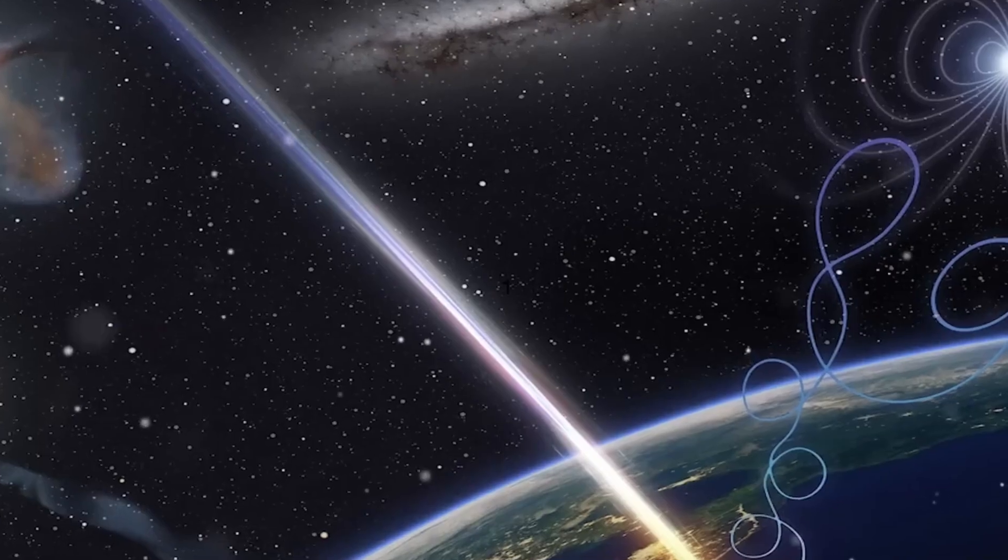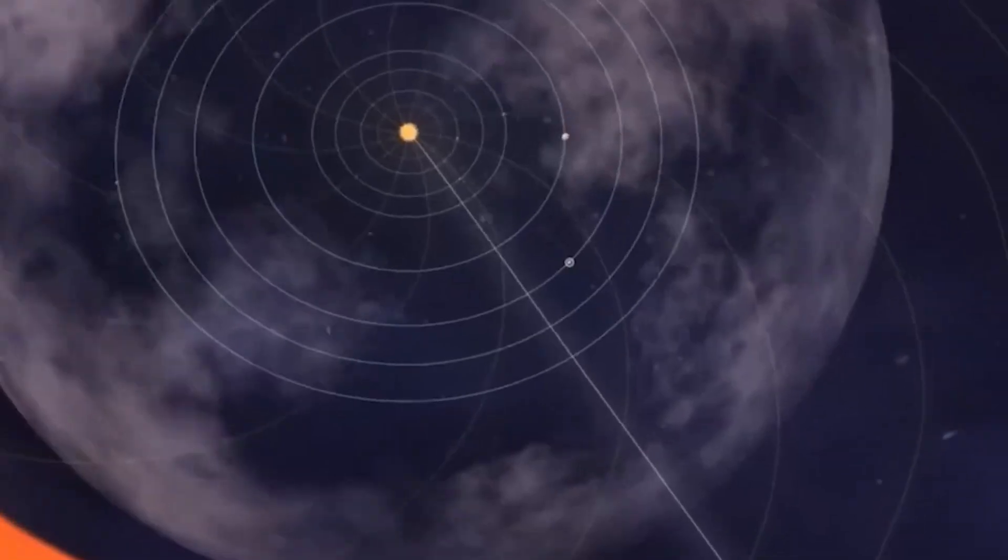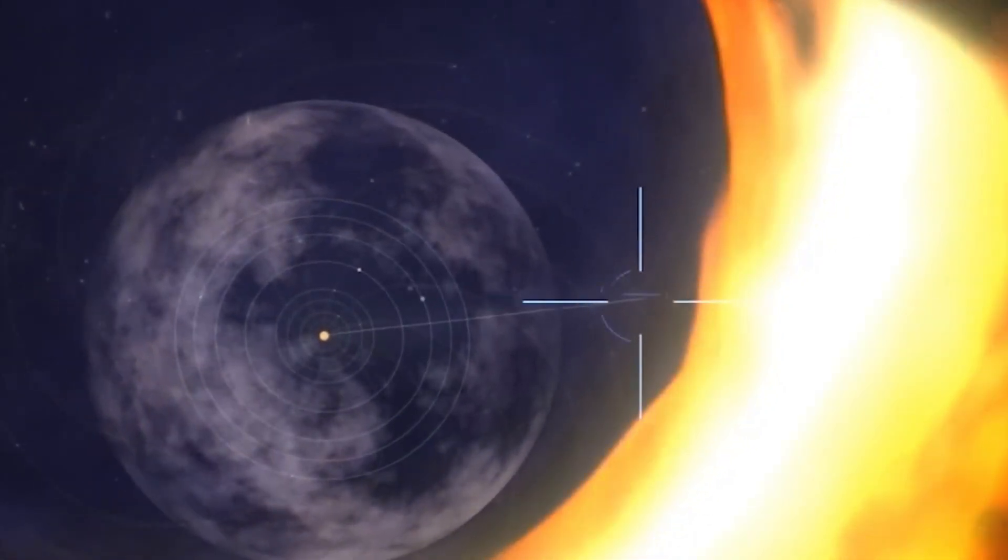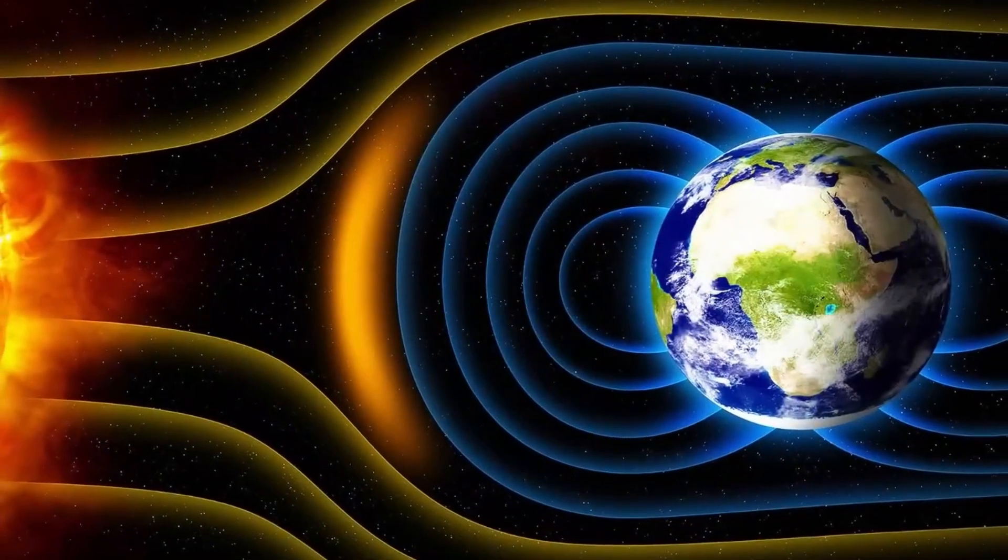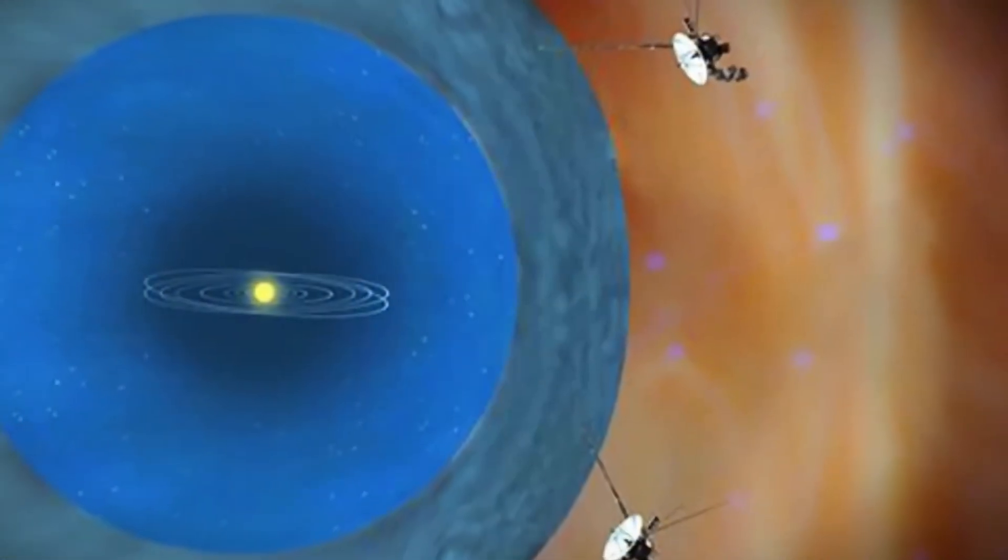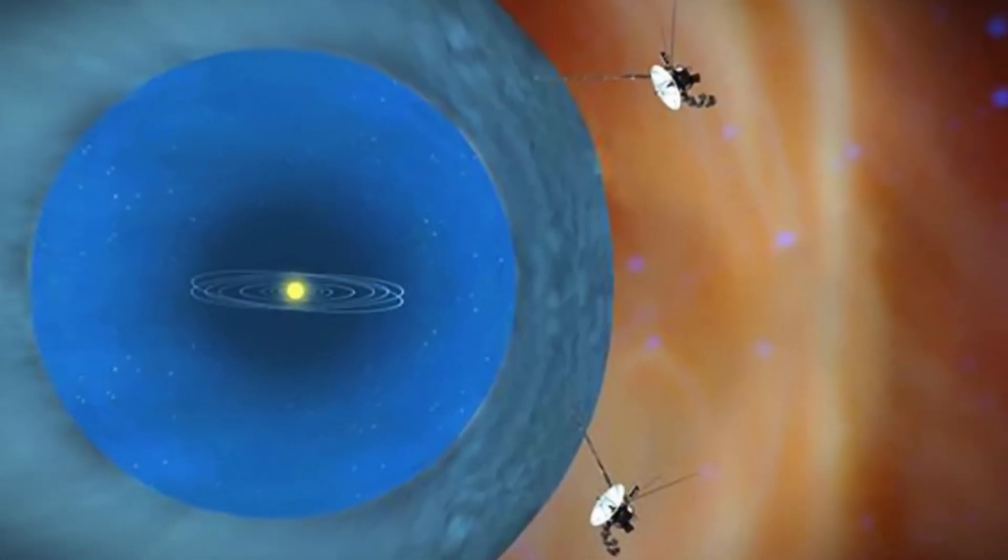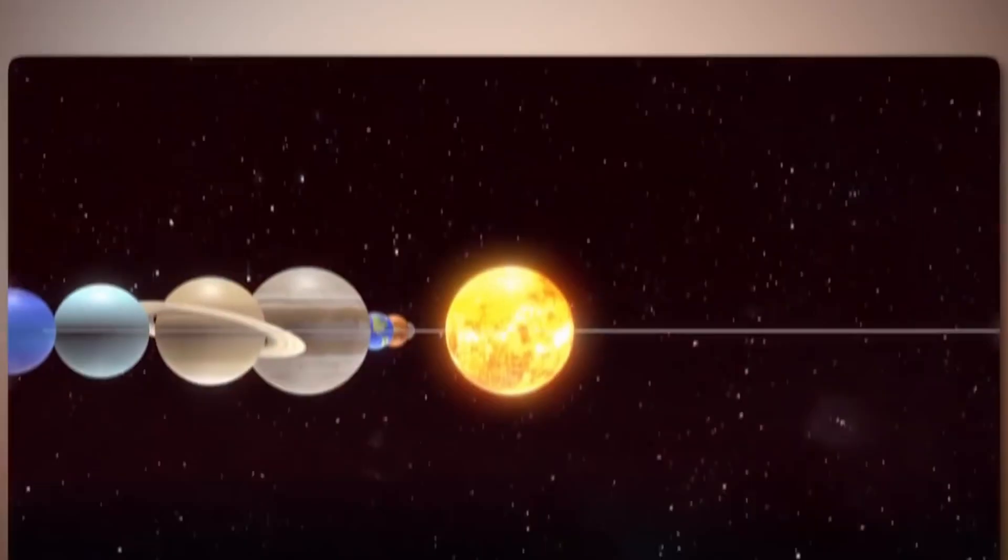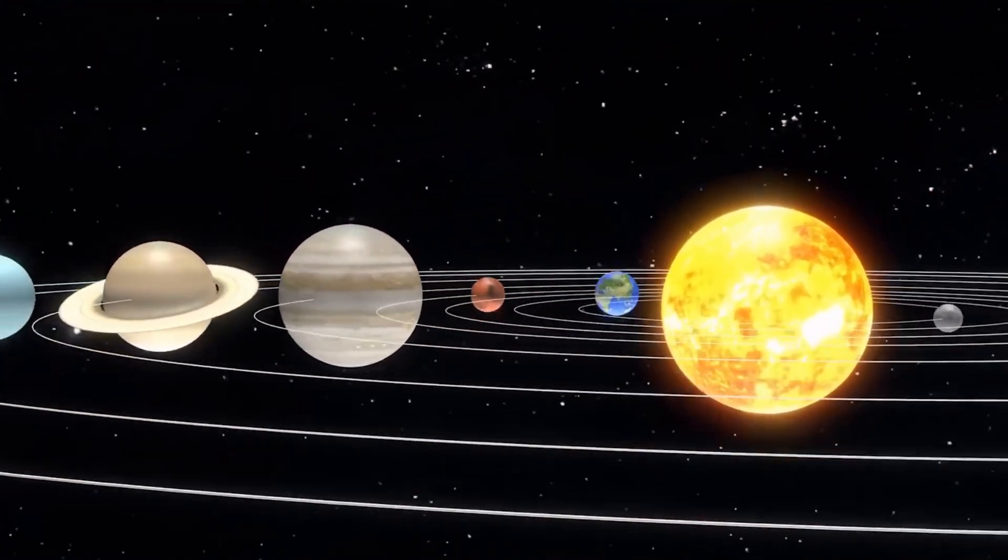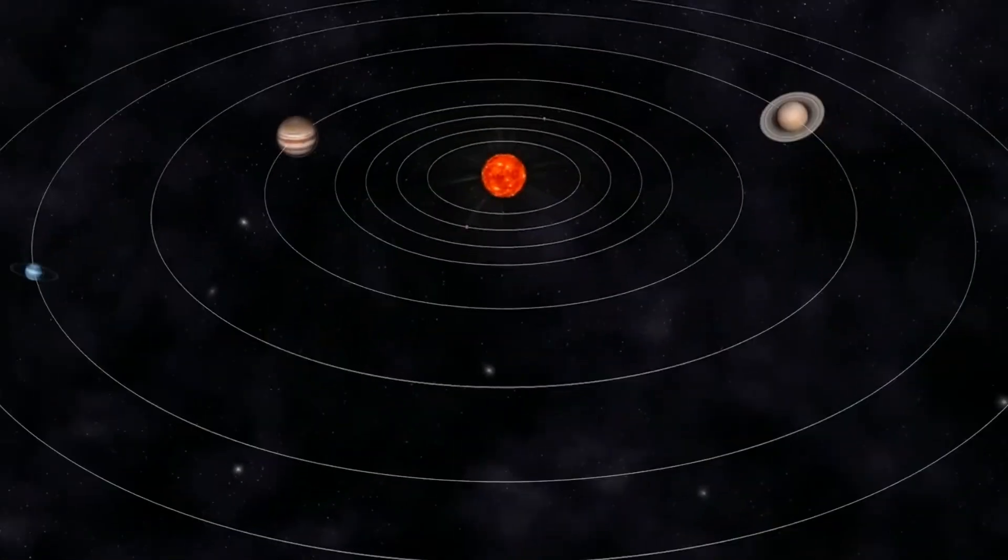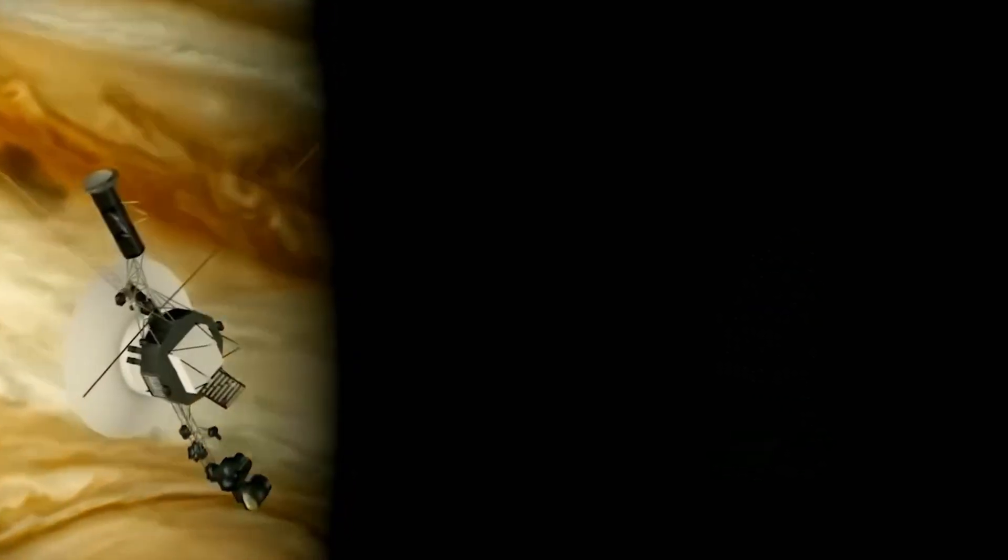This vast bubble, powered by the solar wind, extends roughly 11 billion miles from the Sun, encapsulating the Sun, all eight planets, and a significant portion of the solar system's outer regions. Strange, isn't it? But it's the kind of strangeness that works in our favor. The heliosphere acts as a protective shield, guarding everything inside, including us, from the galaxy's most dangerous radiation. Without it, life as we know it would be exposed to potentially catastrophic hazards.